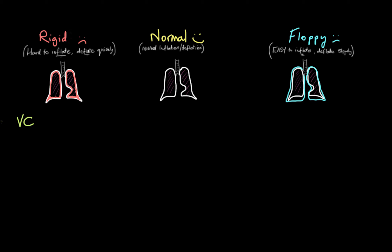As discussed in previous videos, we're going to be in volume control — AC/VC. The AC part doesn't matter as much here; we're in volume control ventilation. Let's say our tidal volume is 500 mils, as it has been in many of our examples, and our rate is 10 breaths per minute. The tidal volume doesn't have to be 500 mils for any patient specifically, but it's a nice easy number to work with.